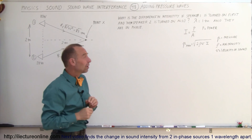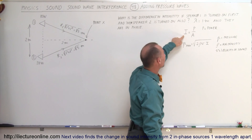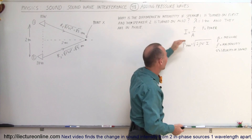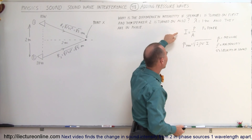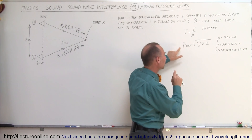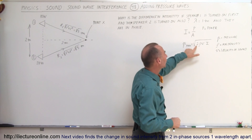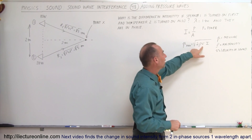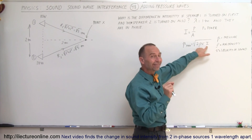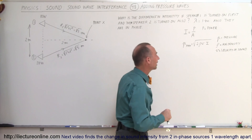Some equations we need: the intensity from a source equals the power of the source divided by the area over which it spreads — that's a very important equation. Also, the maximum pressure of a sound wave equals the square root of two times the density of the air times the velocity of sound in air times the intensity at that location.